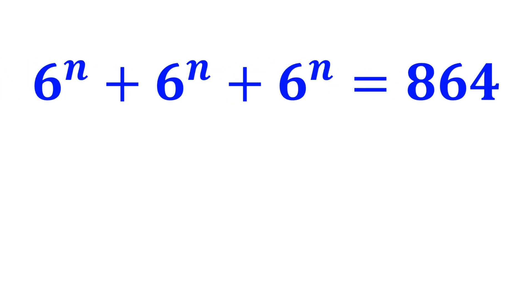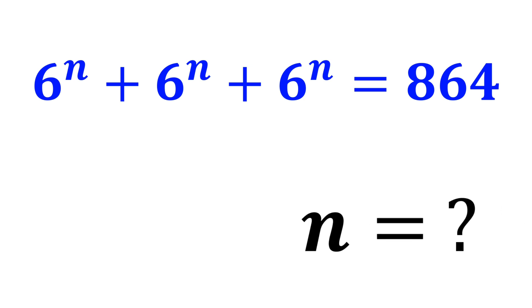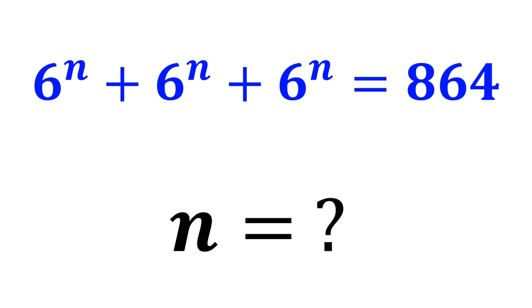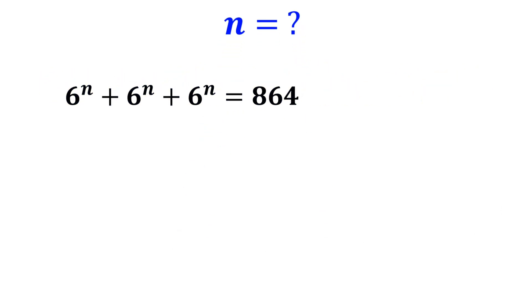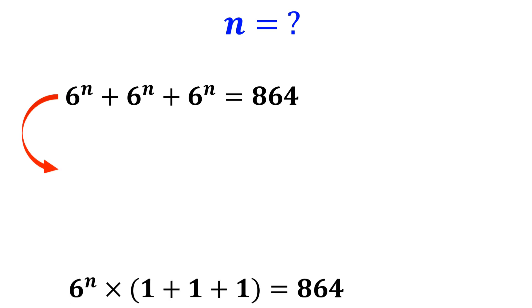If 6 to the power of n plus 6 to the power of n plus 6 to the power of n equals 864, then what is the value of n? Let's break it down step by step together. First, we write this equation as follows.